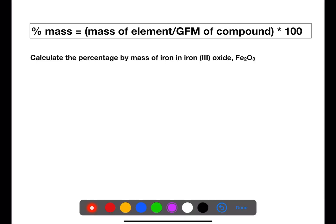Let's try this example. Calculate the percentage by mass of iron in iron oxide, which has the formula Fe₂O₃.